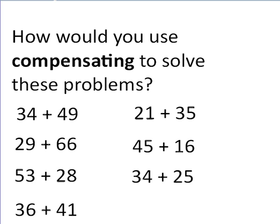Okay, hopefully you've had the chance to have a think about how you'd use compensating with these. Right, starting with 34 plus 49, what I would do is I'd add 50, and then take away 1.